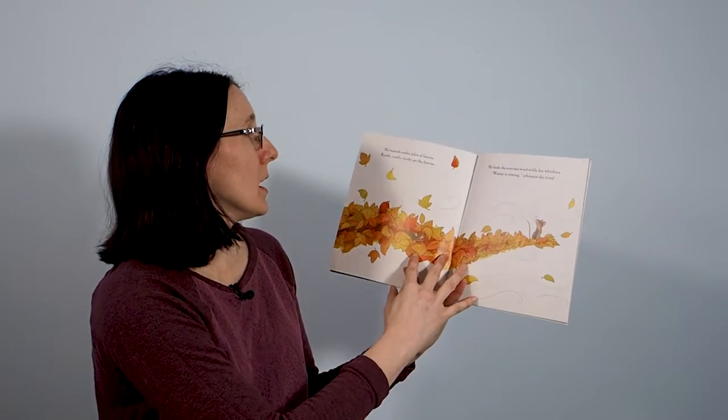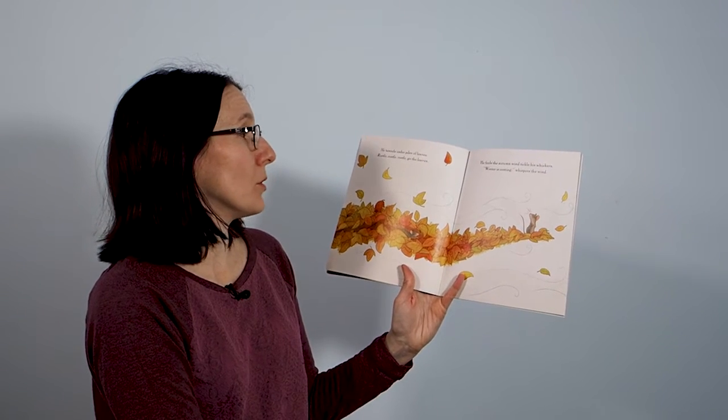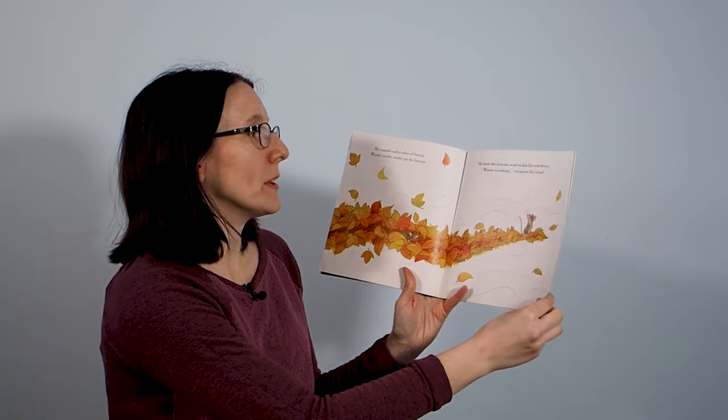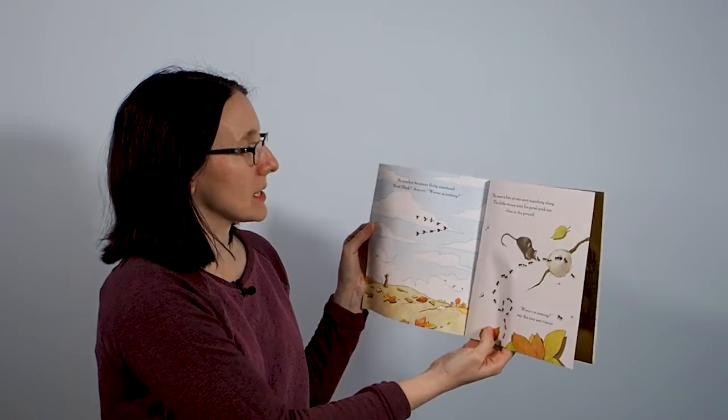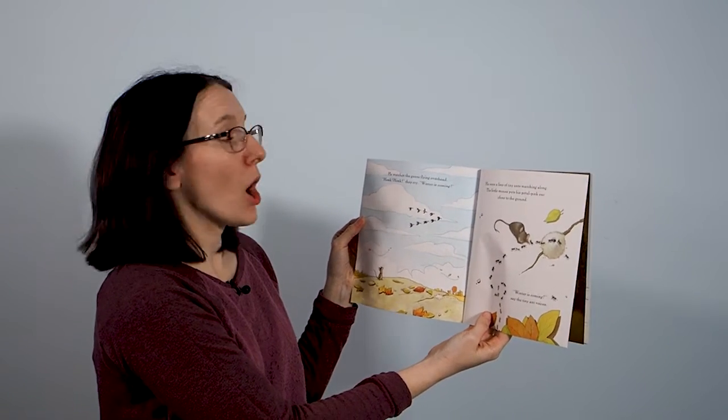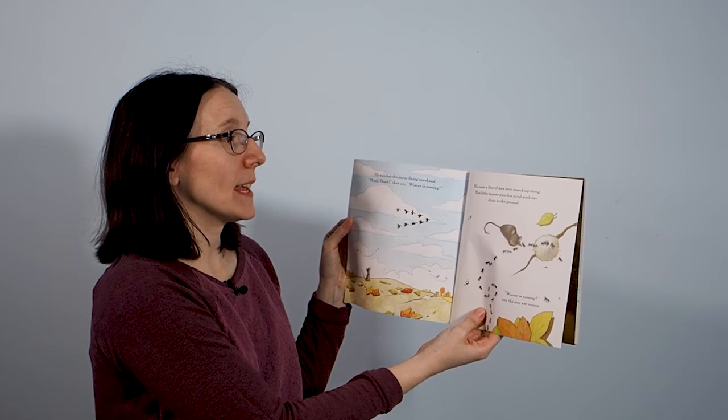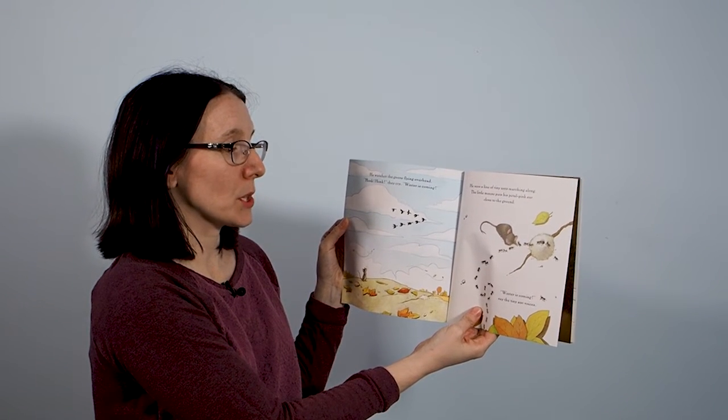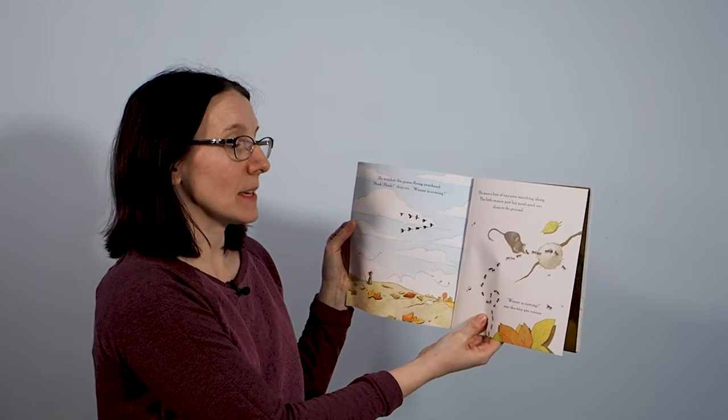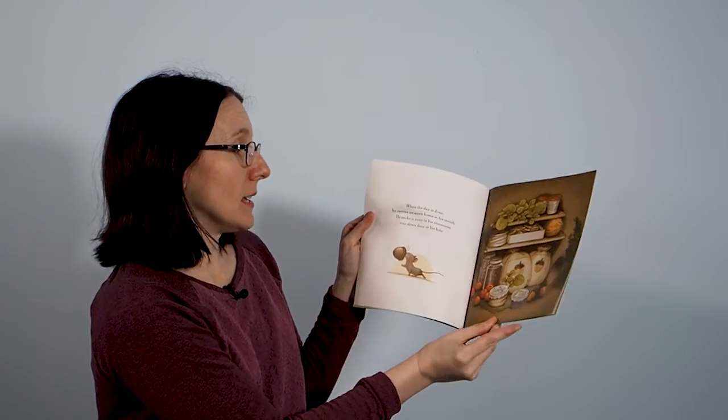Off he goes into the wide world. He tunnels under piles of leaves. Rustle rustle rustle, go the leaves. He feels the autumn wind tickle his whiskers. Winter is coming, whispers the wind. He watches the geese flying overhead. Honk honk, they cry. Winter is coming. He sees a line of tiny ants marching along. The little mouse puts his petal pink ear close to the ground. Winter is coming, says the tiny ant voices.